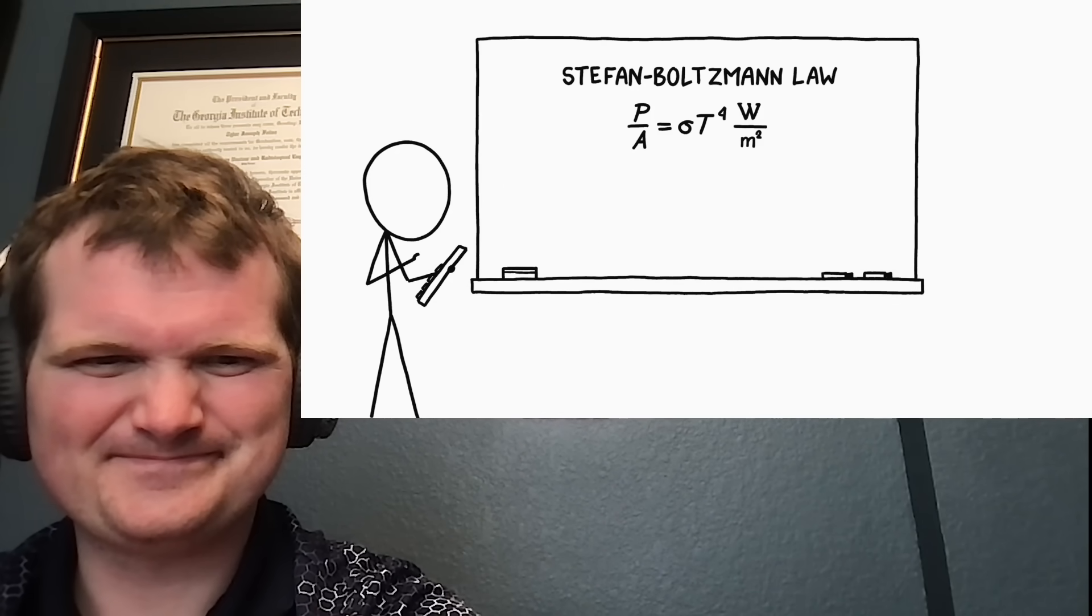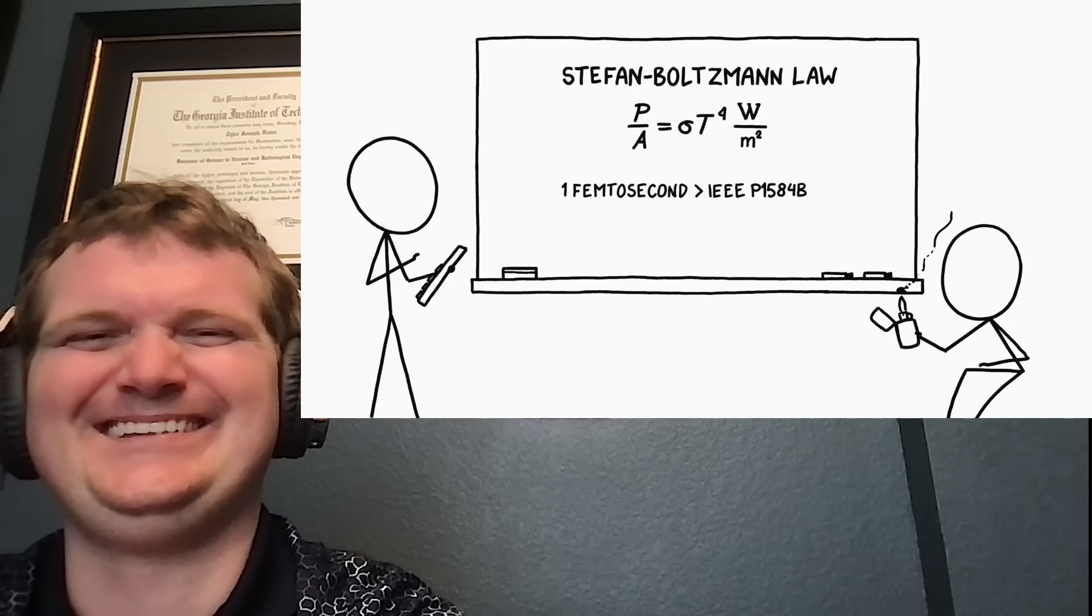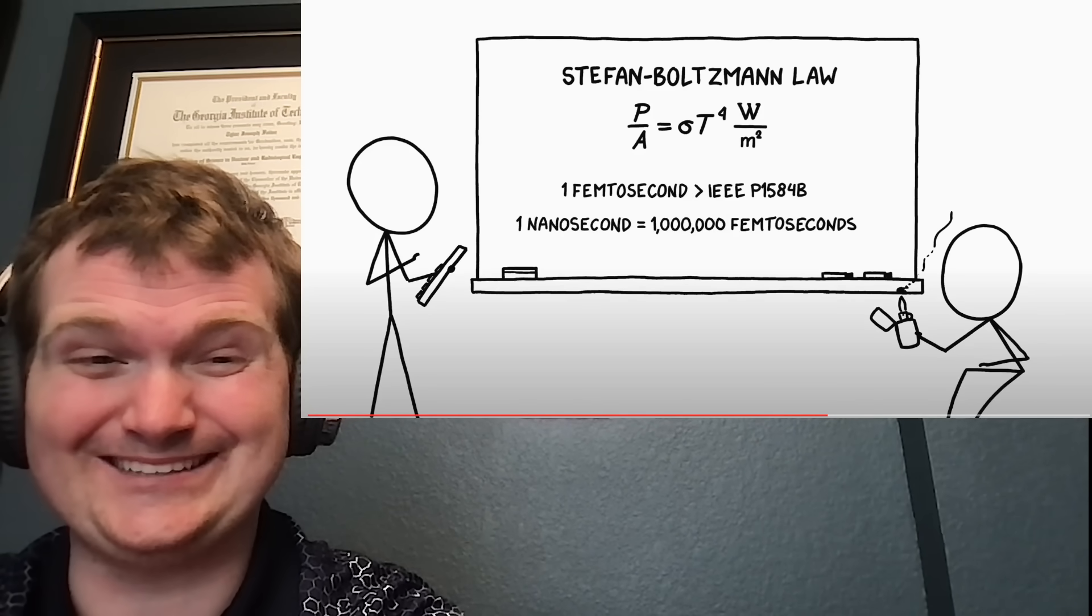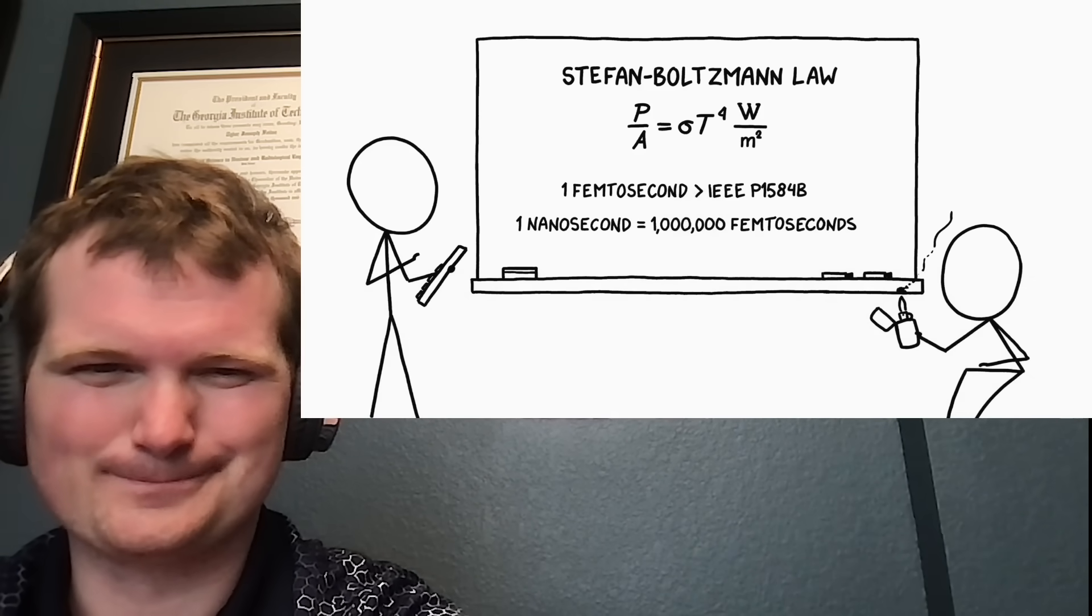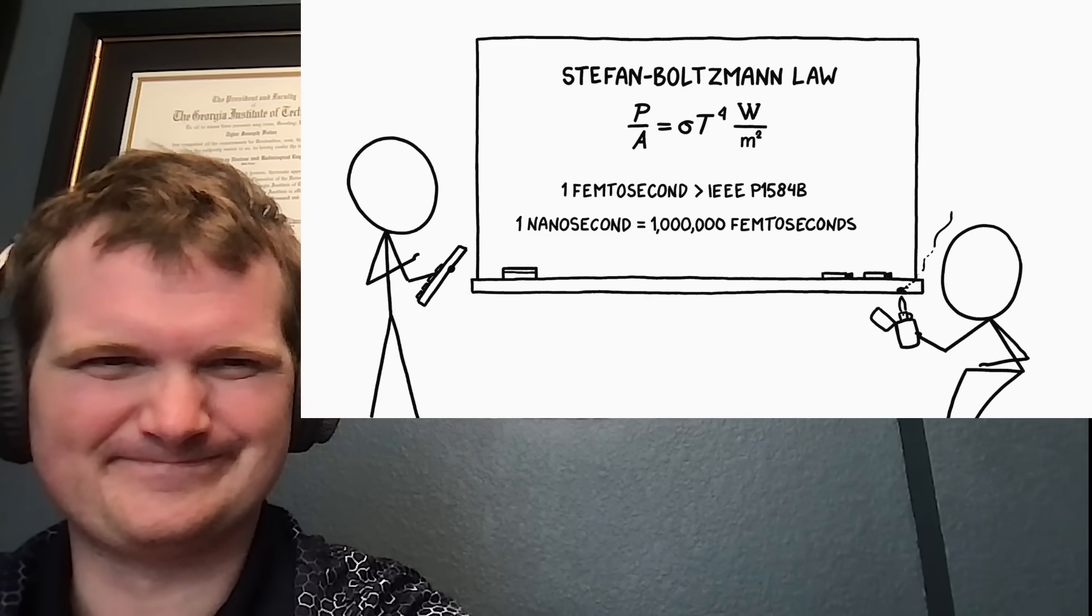The Stefan-Boltzmann law lets us calculate how much heat you'd absorb while inside the sun. Oh, here we go. It's not good. You would exceed the IEEE 1584b standard for second-degree burns after one femtosecond in the sun. Yeah, femtosecond's way smaller than nanosecond. A nanosecond, the time you're spending there, is a million femtoseconds. This doesn't end well for you. But there's some good news.